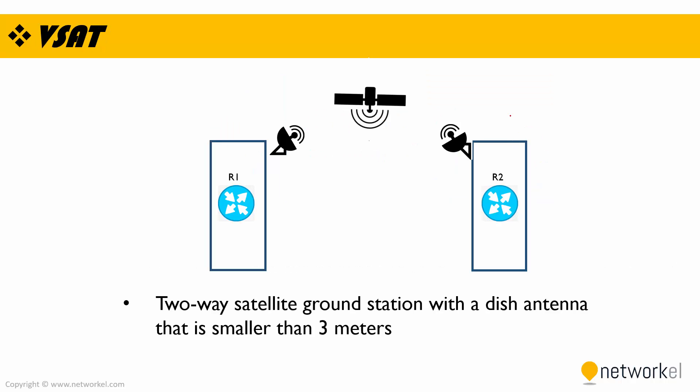Lastly, we have VSAT technology. VSAT is a two-way satellite ground station with a dish antenna smaller than three meters. VSAT provides a private WAN via satellite systems. As you can see, we have multiple antennas looking at the satellite providing communication between two locations. That brings us to the end of this session — thanks for viewing.